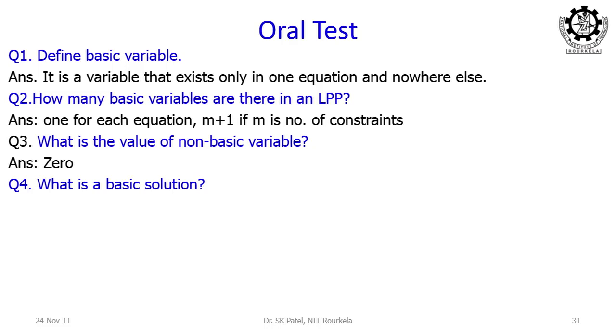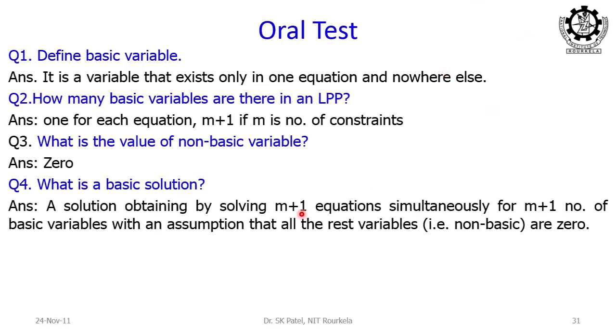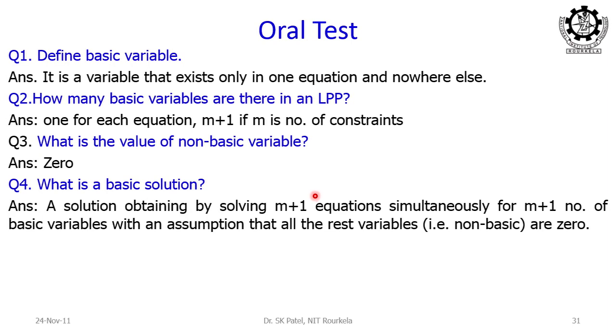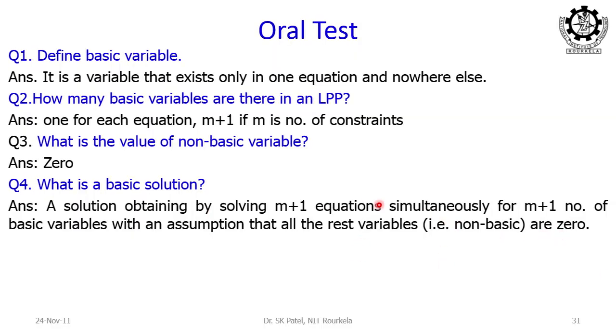Next question: what is a basic solution? We have a total of m+1 equations, so we can only solve for m+1 variables — those are the basic variables. The rest, because the total number is m+n+p+1, the remaining n+p variables (where n is the number of decision variables and p is the number of slack variables) are your non-basic variables. All non-basic variables are assumed to be 0. Substitute these 0 values in the m+1 equations, solve it, and you get the values of the m+1 basic variables. So solving a set of equations where the number of variables exceeds the equations by assuming some variables to be 0 is called a basic solution.